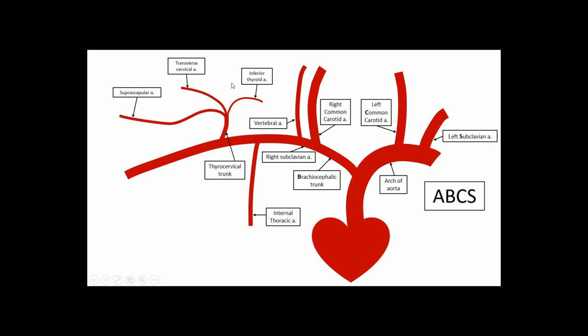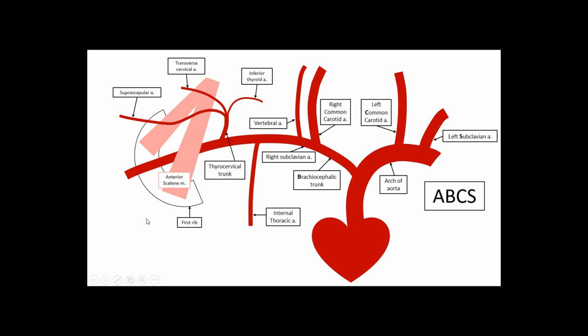Fun fact: this internal thoracic artery is often sampled for coronary artery bypass graft (CABG) to treat a myocardial infarction. Traveling distally, we have a branch coming off superiorly called the thyrocervical trunk. This thyrocervical trunk has three arteries: the inferior thyroid artery, the transverse cervical artery, and the suprascapular artery. The inferior thyroid artery provides blood supply to the thyroid, and the transverse cervical artery supplies the trapezius and sternocleidomastoid muscle.